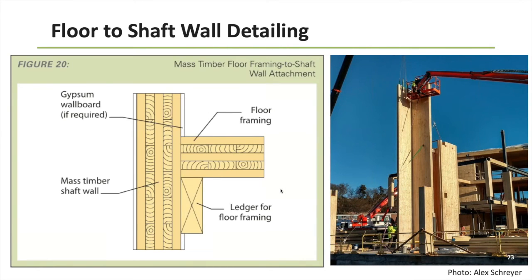Going back to mass timber shaft walls and specifically how they interface at the floor-to-wall intersection: typically mass timber shaft walls are installed in lifts such that one panel may be two to three or even four stories tall. You're generally framing the mass timber floor panel into the side face, as opposed to doing a platform frame detail. As the image shows, you're generally doing some type of ledger detail — oftentimes a wood ledger attached to the face of the mass timber shaft wall that your floor panel or floor framing simply bears on.